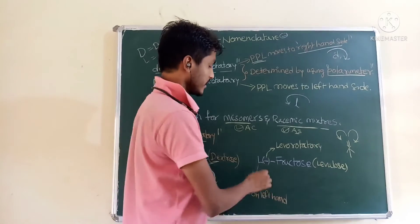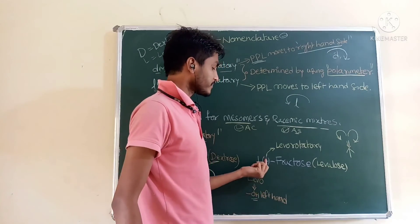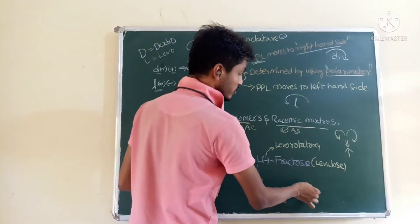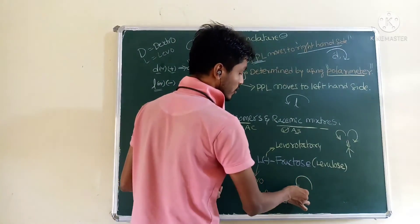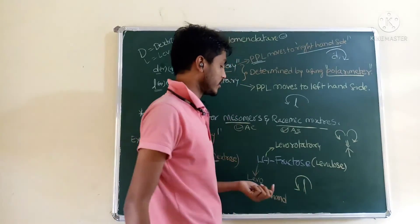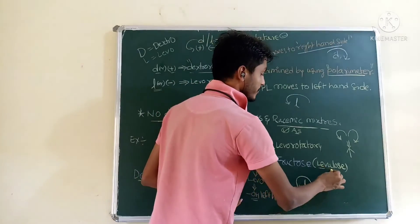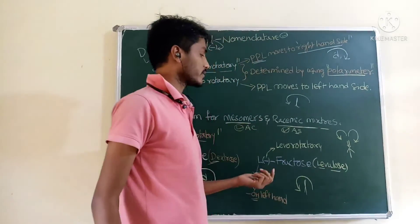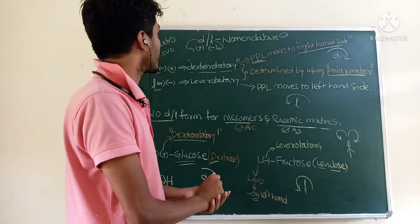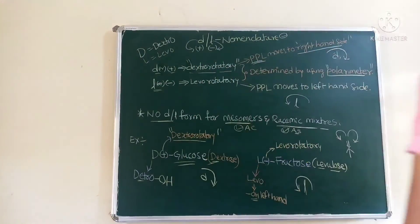Likewise, capital L means levo — OH is present on the left hand side. The negative symbol indicates levorotatory. Fructose rotates plane polarized light towards the left hand side, so it is called levorotatory fructose, or levo fructose. This concludes the topic of small d and small l configuration assignment.